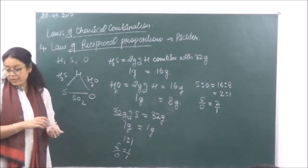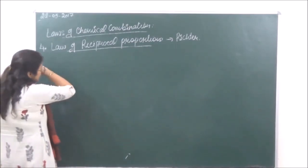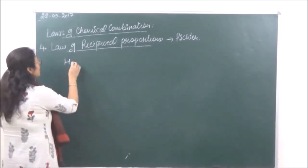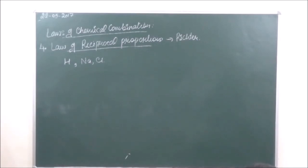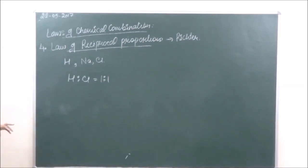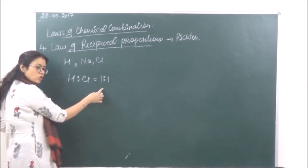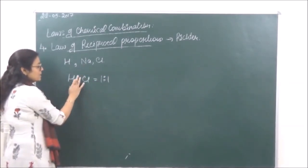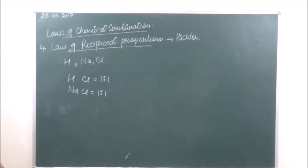Let's take another example to make it more clear: hydrogen, sodium, and chlorine. Hydrogen combines with chlorine to form hydrogen chloride, and sodium combines with chlorine to form sodium chloride. The ratio of hydrogen to chlorine in HCl is 1 is to 1. So in NaCl, the ratio of sodium to chlorine should be in the reciprocal ratio, which is also 1 is to 1. This confirms the law of reciprocal proportions.